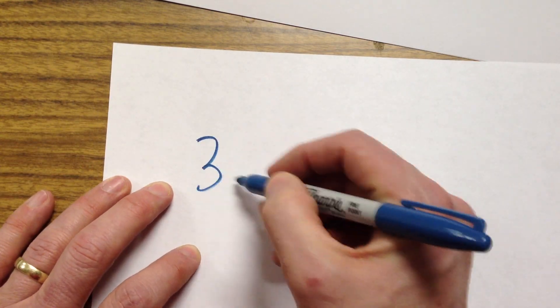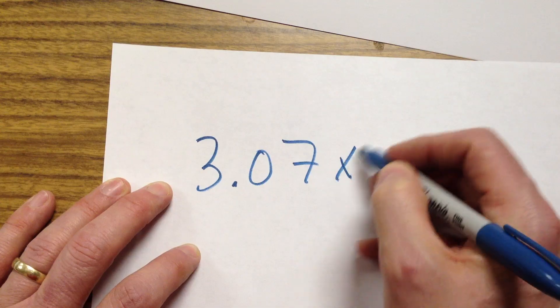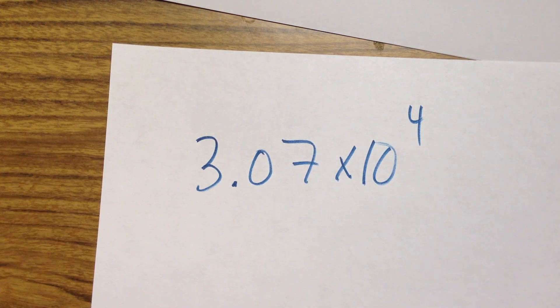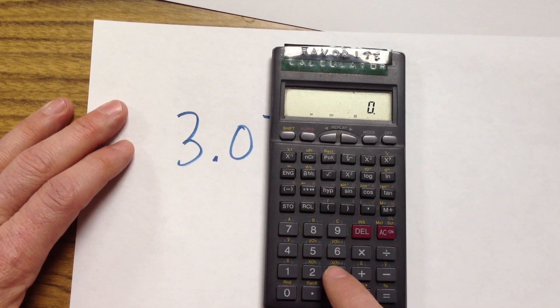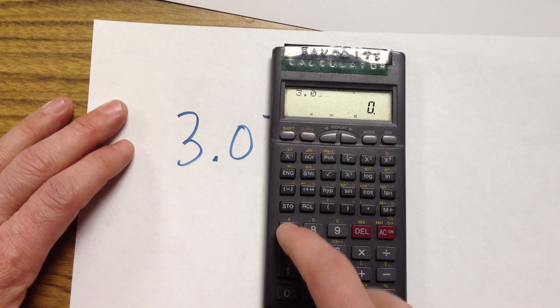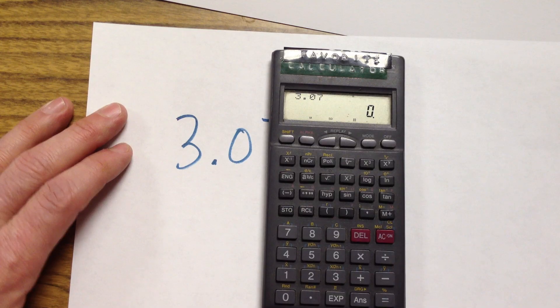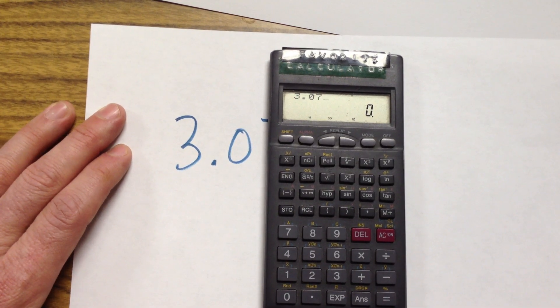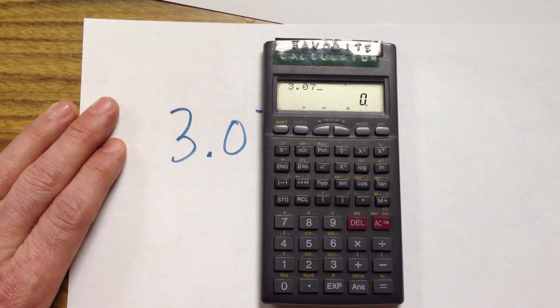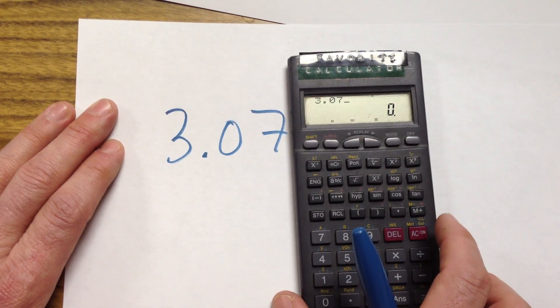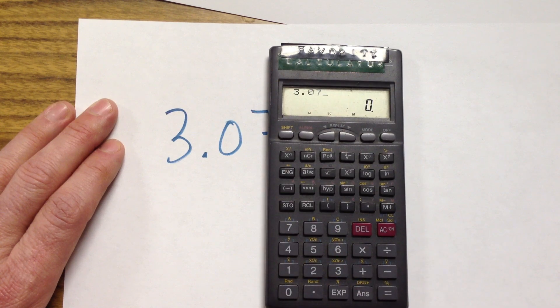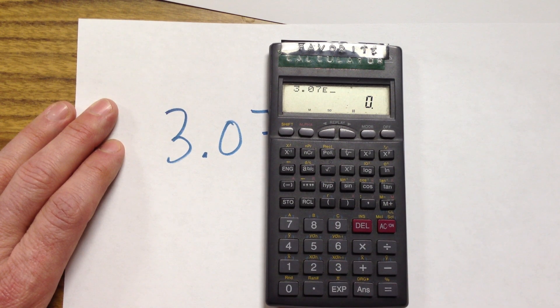So, if I have, for example, 3.07 times 10 to the 4th, and I want to put that into my calculator, I'm going to hit 3.07. I am not going to hit times. I'm not. I'm just going to hit my E button. Put it in scientific notation. The 3.07. And now I'm saying, hey, I want this in scientific notation calculator. So, I just hit the scientific notation button.